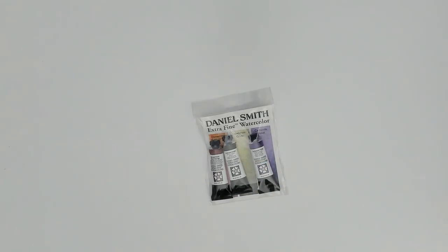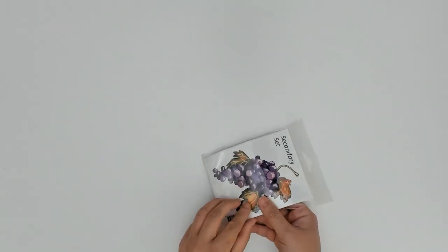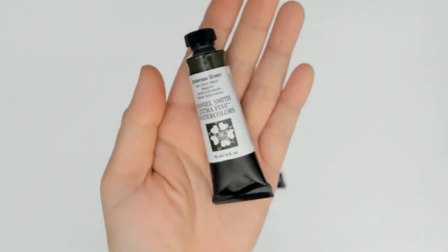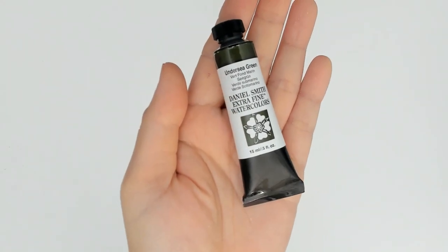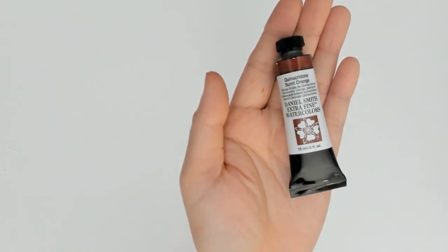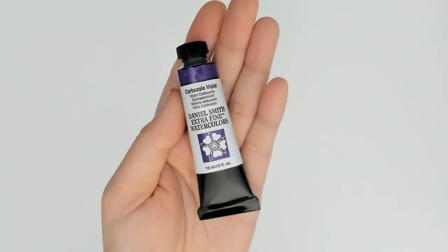For the secondary colors, I'm using the Daniel Smith secondary set which consists of undersea green, quinacridone burnt orange, and carbosol violet.